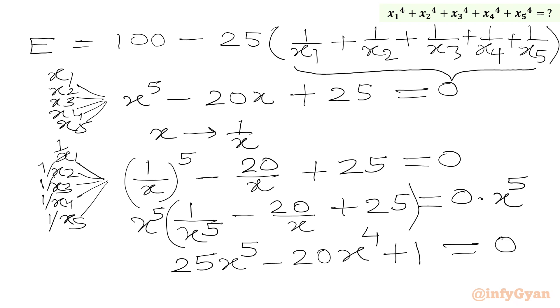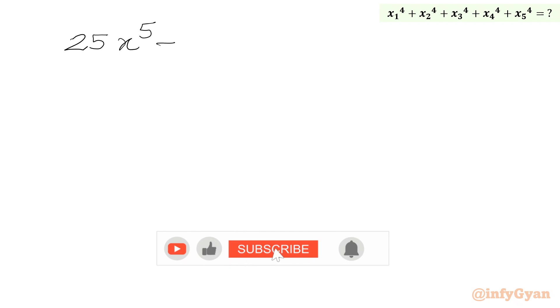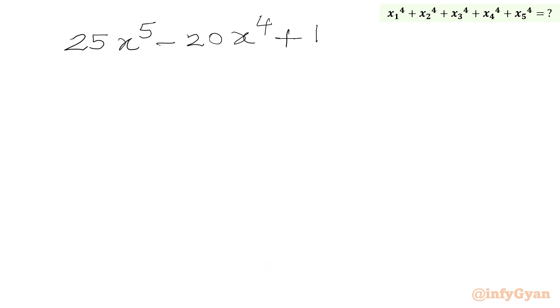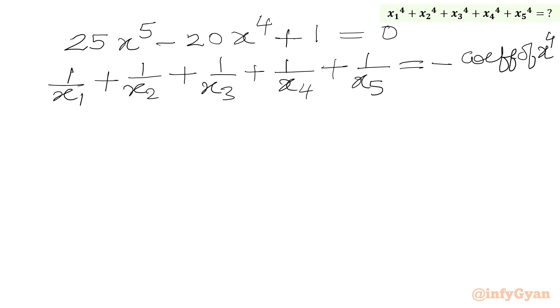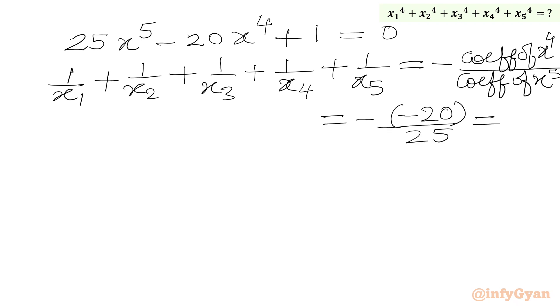Now we can use Vieta's formula for sum of roots. The equation is 25x power 5 minus 20x power 4 plus 1 equal to 0, and the roots are 1 over x1, 1 over x2, 1 over x3, 1 over x4, 1 over x5. So the sum of roots equals 1 over x1 plus 1 over x2 plus 1 over x3 plus 1 over x4 plus 1 over x5, which equals minus the coefficient of x power 4 divided by the coefficient of x power 5, equal to minus of minus 20 over 25, giving us 4 over 5.